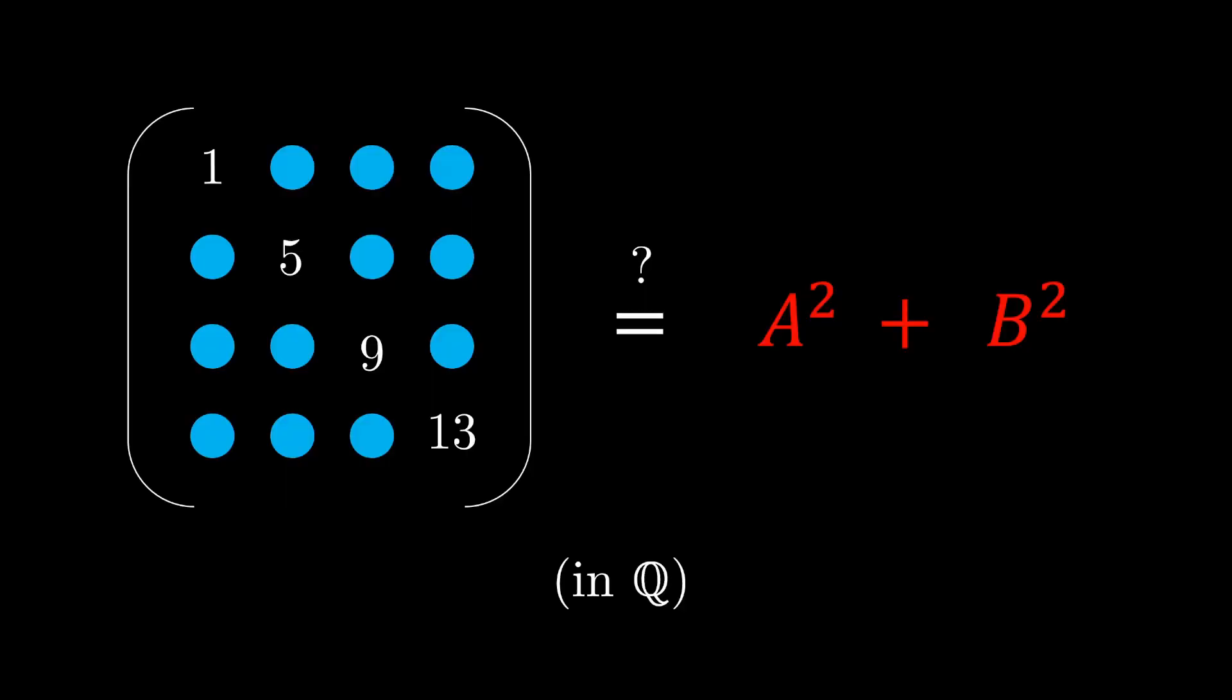So where were we? Right, we are supposed to find out whether we can always write 4x4 matrices of this form in the form a² plus b².